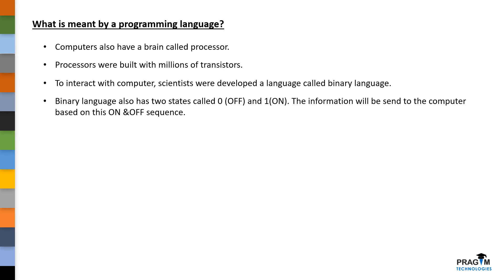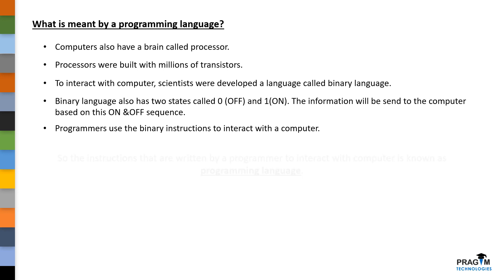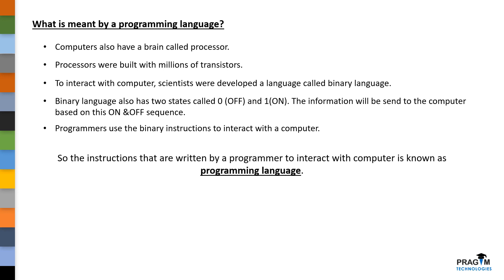If the value is 1, the voltage will be passed through the circuits. The processor's responsibility is to execute the binary instructions written by a programmer. So, the instructions written by a programmer is known as a programming language.